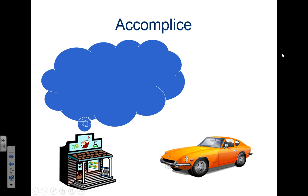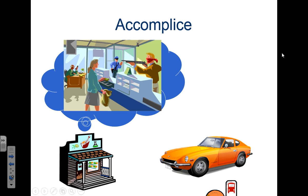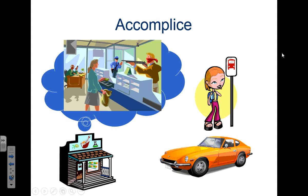A getaway driver is an example of an accomplice. The getaway driver waits outside the store while the principal goes in and robs it. When the principal is done, they jump in the car and the getaway driver drives them away. The getaway driver is an accomplice — they're present and they helped and aided in some way.